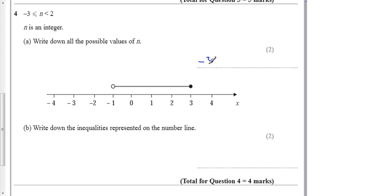So we're allowed minus 3, minus 2, minus 1, 0, and 1. We're not allowed 2, they're all the integers between it, all the whole numbers.